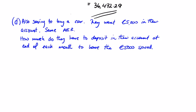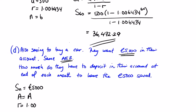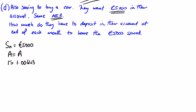The last part of this question, we're told that they're also saving to buy a car. They want £5,000 in their account, so that £5,000 is the sum of my m payments. So what we don't know in this case is the amount that they need to save, and the same annual equivalent rate. So we're looking for a in this case, and the rate is the same, 1.006434.